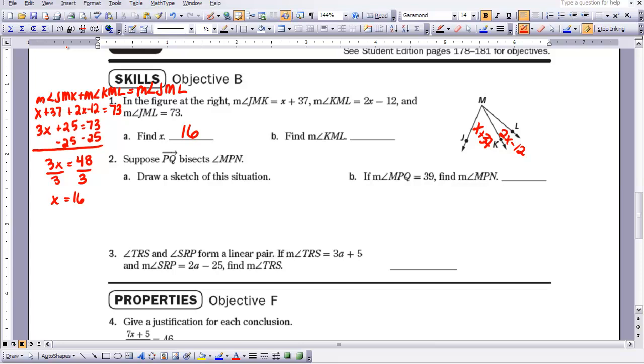But now I can use substitution in again to find out what the measure of KML is. So I'm going to write 2 times 16 minus 12, which would give me a total of 20 degrees. So I know that this measure is 20. Now if I know this is 20 and I know the whole thing is 73, I know that this angle, this one, is going to be 53 degrees. So lots of things I can do here.